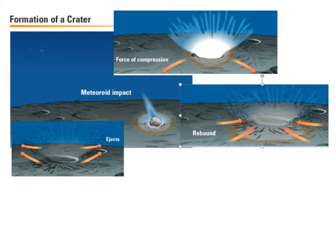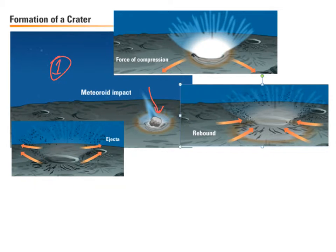Let's start off with the formation of a crater. The first thing that's going to happen is we're going to have a meteoroid impact. It's going to come down and hit the surface of the Moon. When that happens, it's going to create a little hole, but it's also going to send out this wave of compression where everything gets kind of squished together because we made this hole.